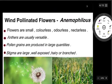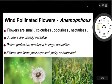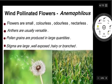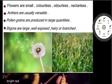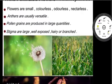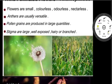Now we will discuss about wind-pollinated flowers — anemophilies. Flowers are small, colorless, odorless, and nectarless, because they need to fly in the wind rather than attract any insect or bird. Anthers are usually versatile. Pollen grains are produced in large quantities, because their success rate is relatively low. Stigma are large, well-exposed, hairy or branched, so that pollen grains can reach them carried by the wind.